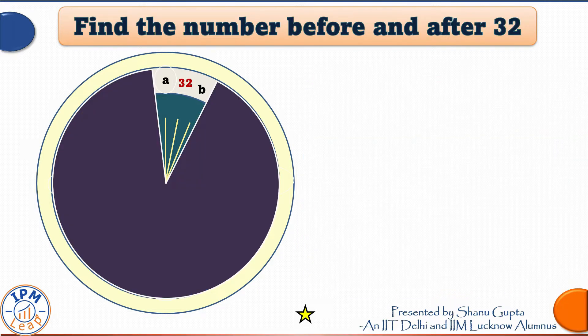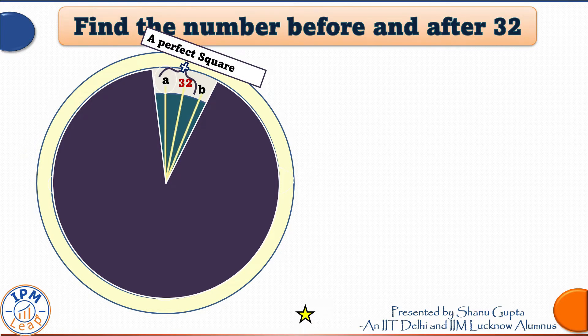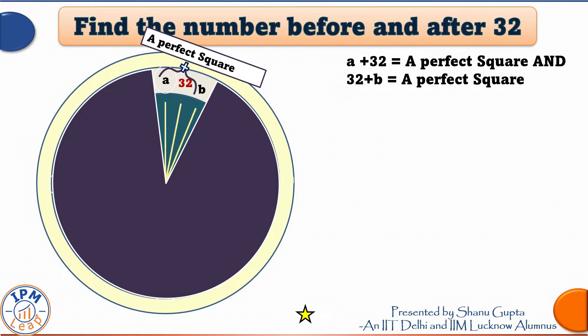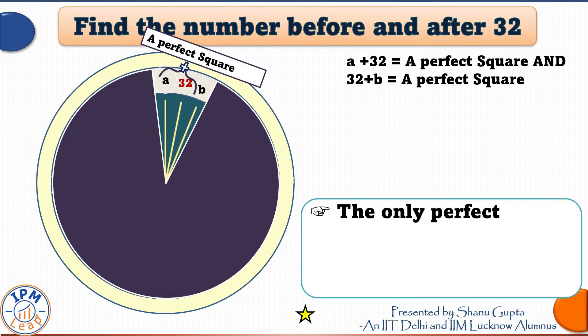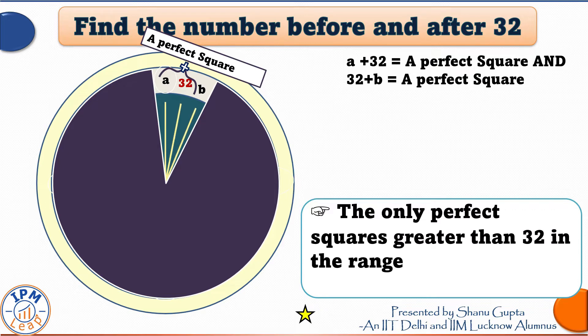So for a moment, I have hidden the two numbers before and after 32. Let us see how we calculate them. Pay attention. A plus 32 has to be a perfect square and 32 plus B also has to be a perfect square.